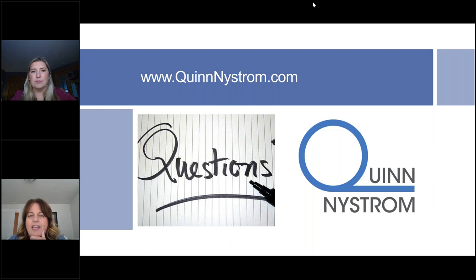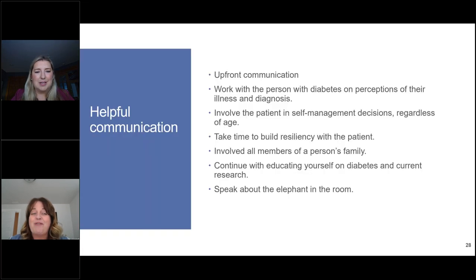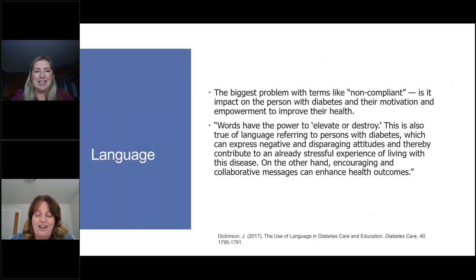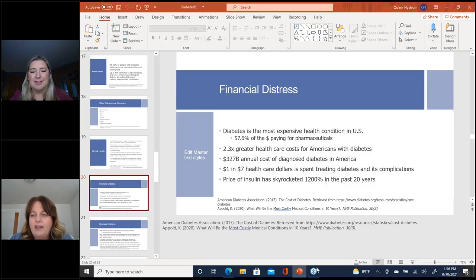Kathy needs clarification about the question on the test regarding the percent of mental health conditions that go undetected among people with diabetes. It is estimated that only around one third of people with diabetes and mental health conditions will receive a diagnosis and proper treatment — so up to 45% of cases of severe psychological distress go undetected among patients being treated for diabetes.